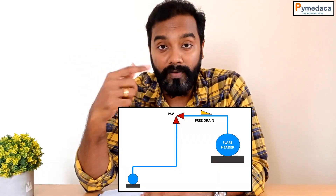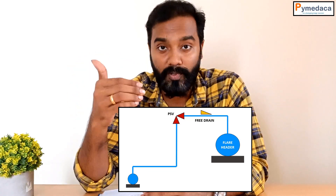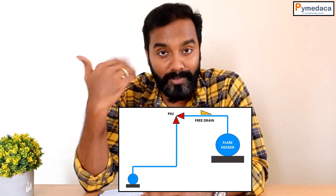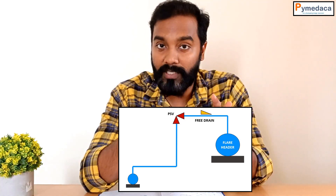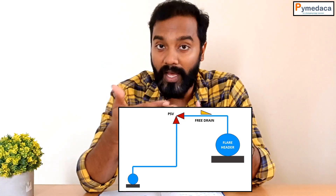The third point is: why do we place a PSV always on top, or above the flat header? That is because the downstream PSV piping should have a free-draining facility. To achieve free draining, the PSV must be placed above the flat header; otherwise, free draining will not occur. So you must install the PSV above the flat header in your process plant.